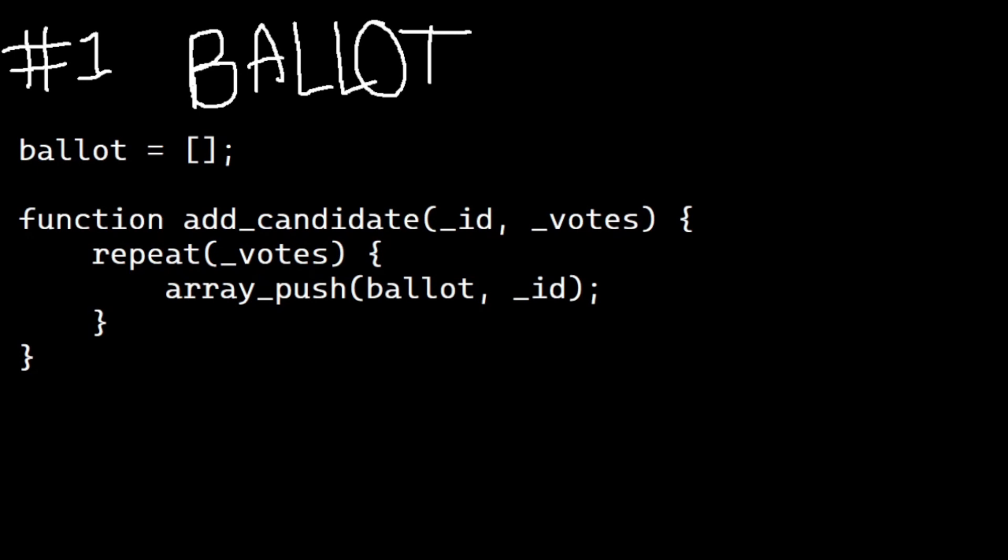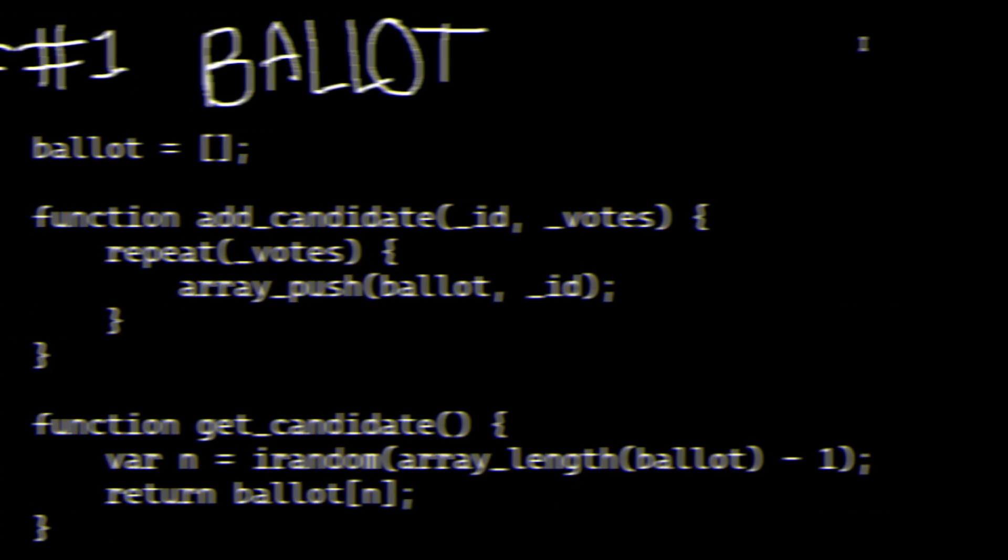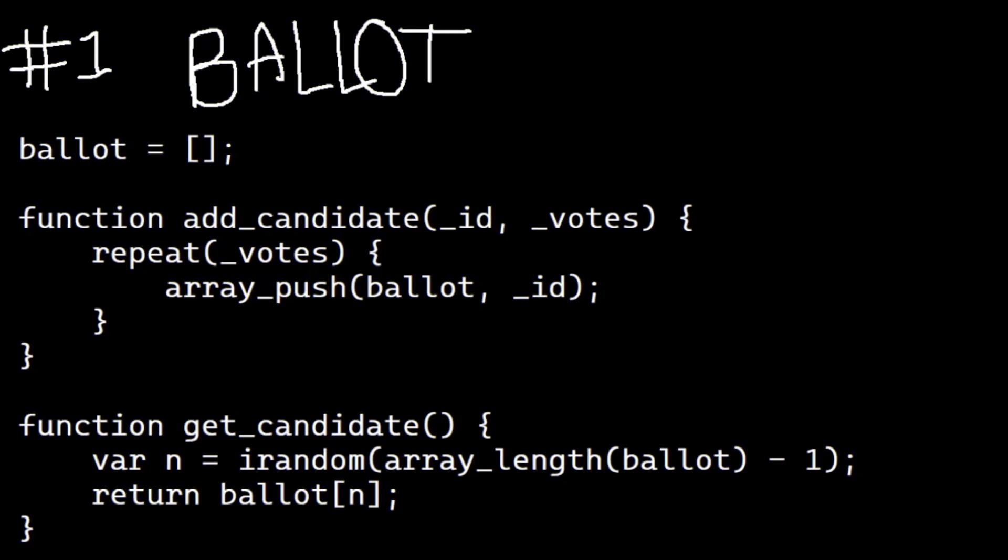Then we want to randomly pick an entry in our array. And we could do this by shuffling the array and then picking, well, it doesn't matter, the first entry, any entry. Or we could generate a random number between zero and the length of the array and pick that entry.